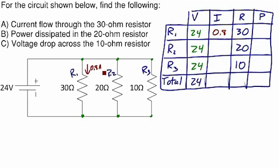For R2, I equals V over R, 24 volts over 20 ohms, that's 1.2 amps. And for R3, 24 volts over 10 ohms, that's 2.4 amps. And that makes sense that you would get more current through the smaller resistor.